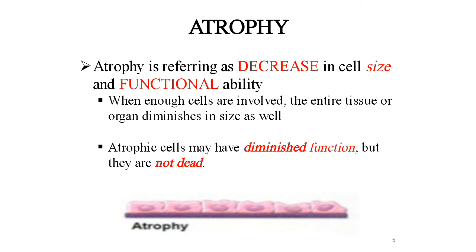Atrophy is referred to as a decrease in cell size and functional ability. Jiski size decrease ho jaati hai aur functional ability bhi kam ho jaati hai. When enough cells are involved, the entire tissue or organ diminishes in size as well. Atrophy cells may have diminished function but they are not dead — size unka chota ho jaata hai lekin function ability unki khatam ho jaati hai.